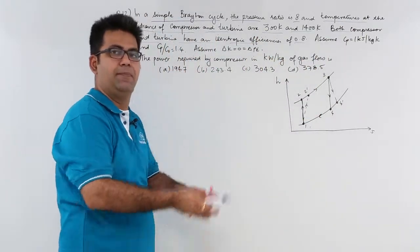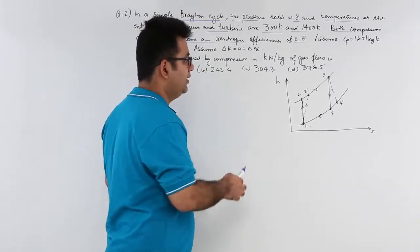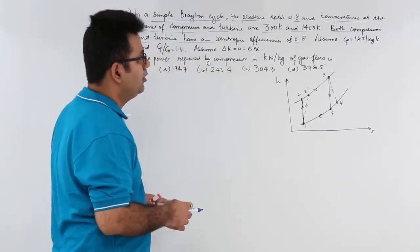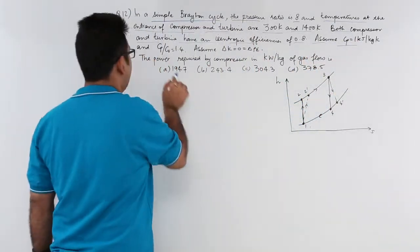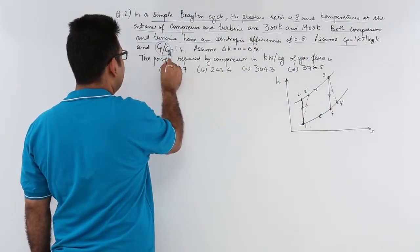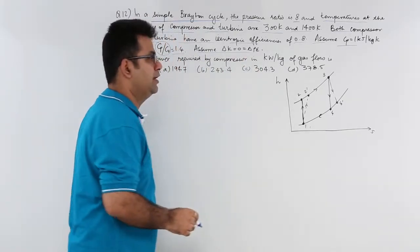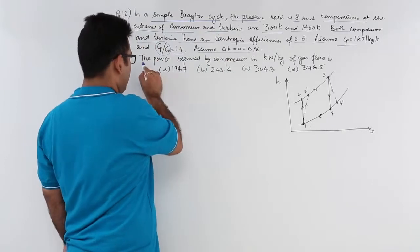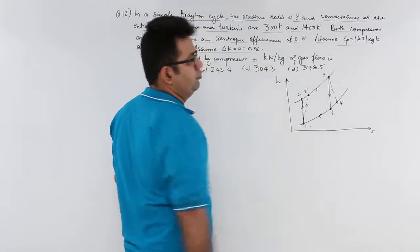So both the processes, compression and expansion, are not ideal. They are deviating from ideal by almost 20%. Assume Cp to be 1 and gamma as 1.4 and assume there are no changes in KE and PE. What is the power required by compressor in kilowatt per kg of gas flow?